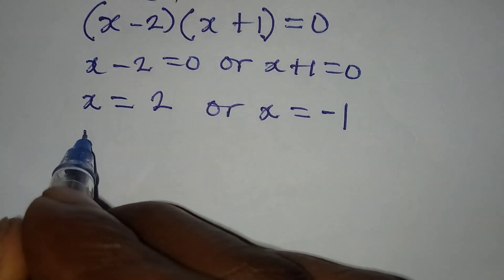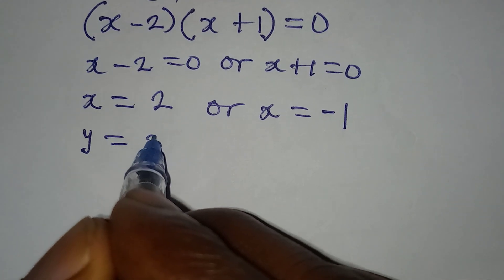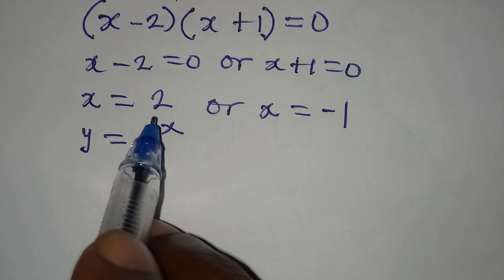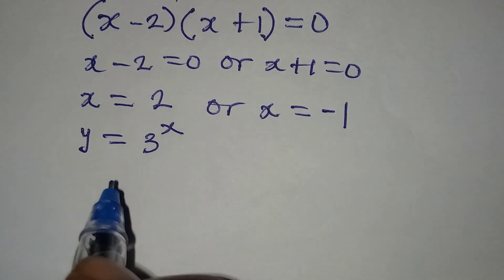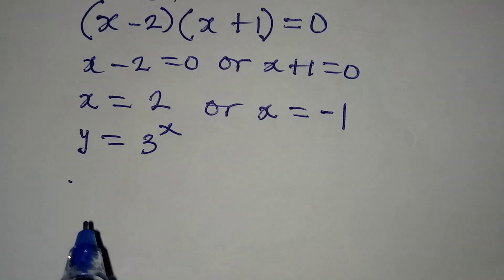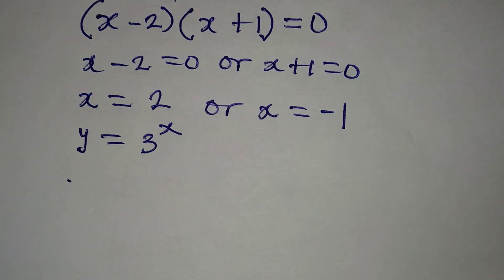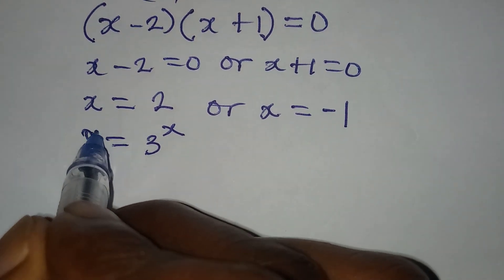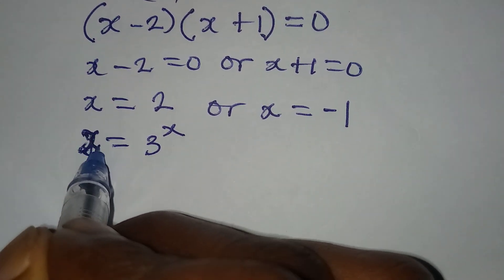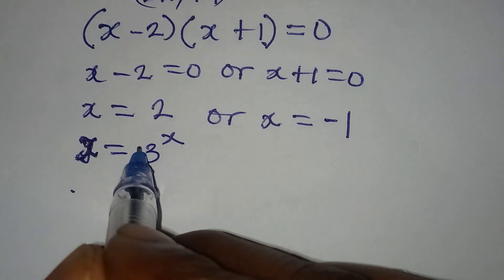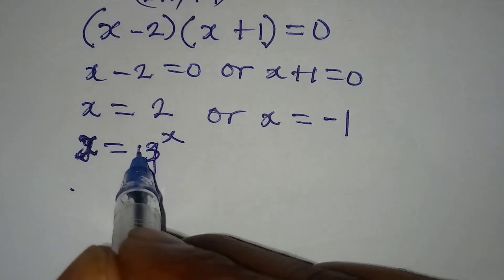Actually, this is not correct — it is x equals y to the power of 3. Thank you, that was a mistake. We got x to be equal to y to the power of 3.